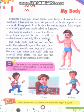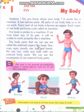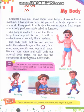The body parts that we can see are called external organs. جو body parts ہم دیکھتے ہیں ان کو external organs بولتے ہیں۔ جیسے head, face, nose, eyes, mouth, ear, legs, hands — یہ external organs ہیں۔ We can run, write, and walk with our external body organs۔